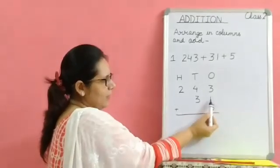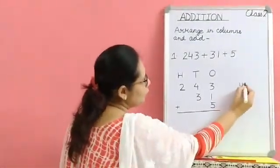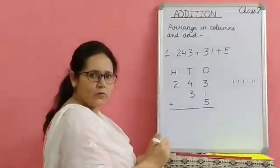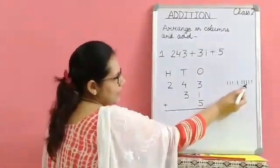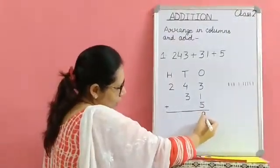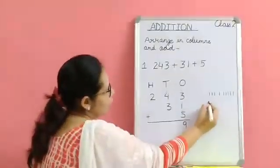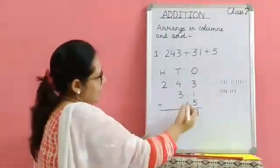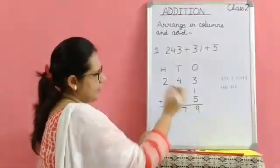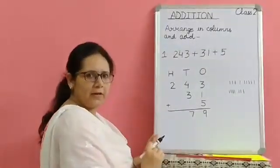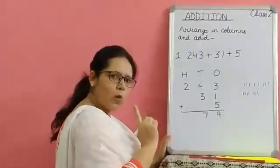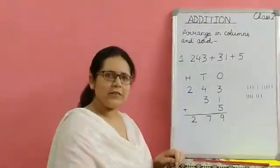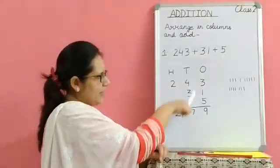Adding the ones column: three plus one plus five. We draw lines and count — we get nine. So we have nine ones. Adding the digits in the tens column, we draw four lines and then three more lines and add them together — we have seven lines. So how many tens? Seven tens. Now counting the numbers in the hundreds digit, we have only one number, which is two. So we write down two. The answer is two hundred and seventy-nine: two hundreds, seven tens, and nine ones.